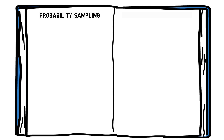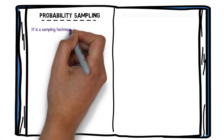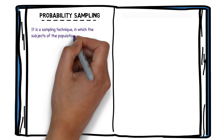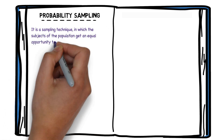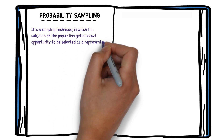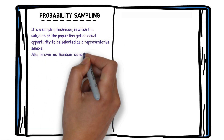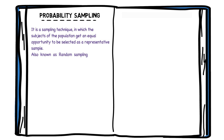Probability sampling is basically a method of selecting a representative sample from the population at random using probabilistic methods. This enables data scientists or researchers to make statistical inferences from the sample being studied to the population of interest. Here, every entity of our population has an equal opportunity of getting selected as a sample.